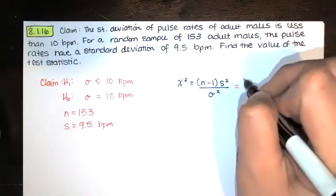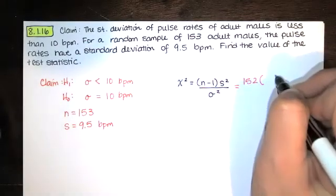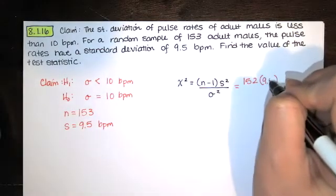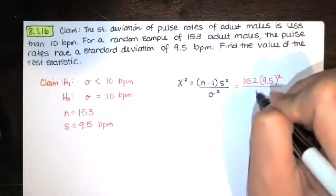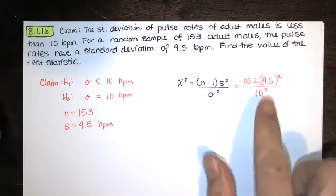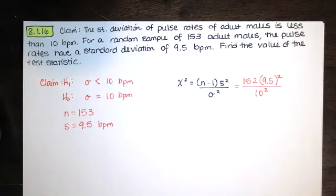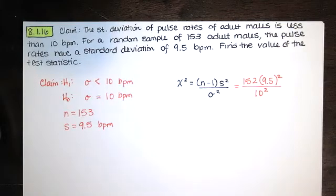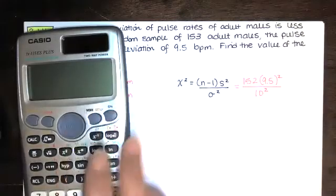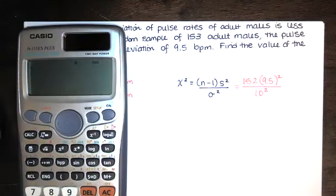So we can compute this pretty easily. 153 minus 1 is 152. The sample standard deviation is 9.5. We're testing against the hypothesis that the standard deviation is equal to 10 beats per minute. So we just compute that. We've got 152 times 9.5 squared divided by 100.